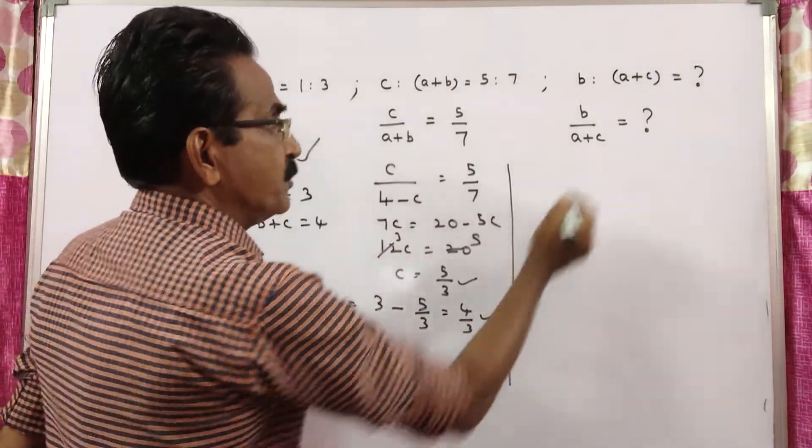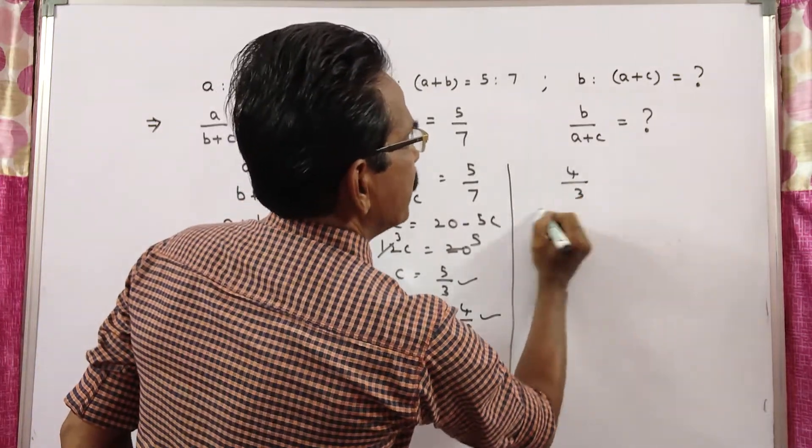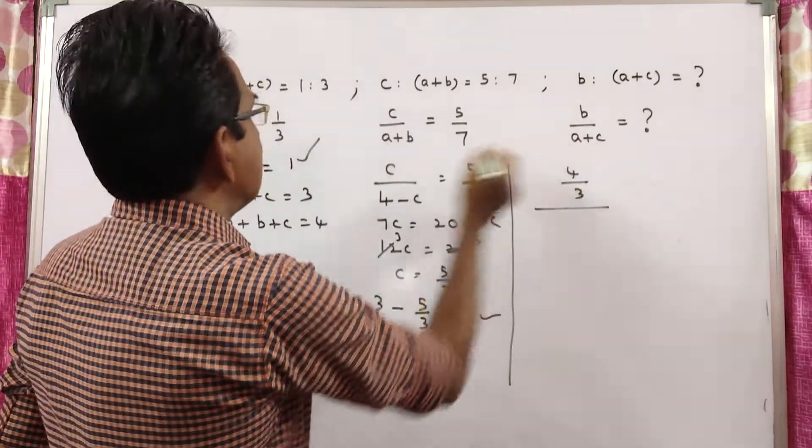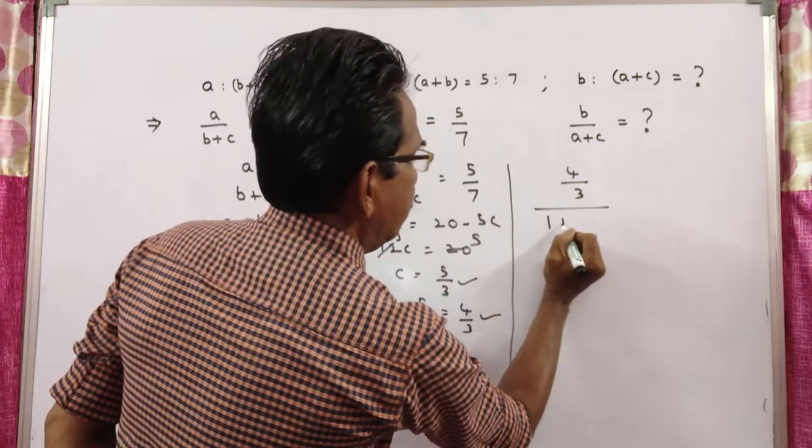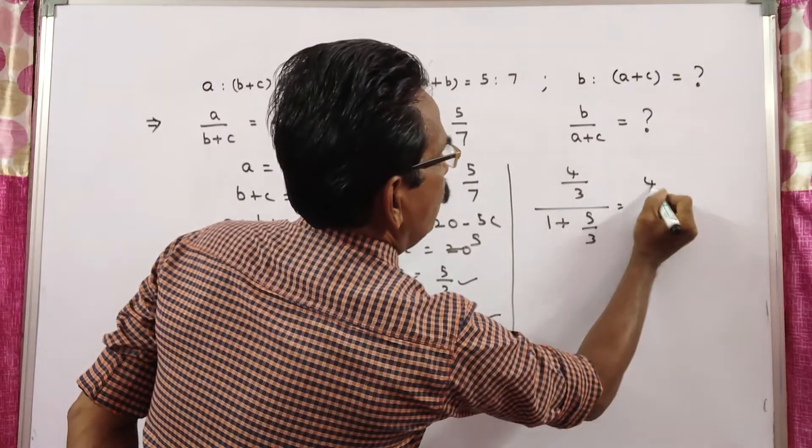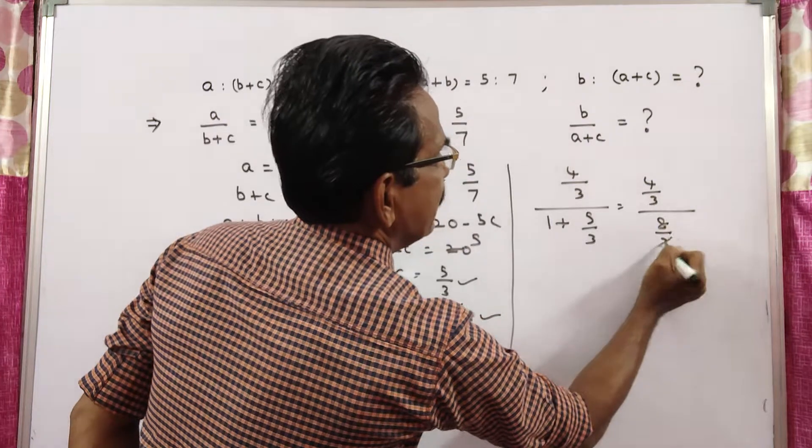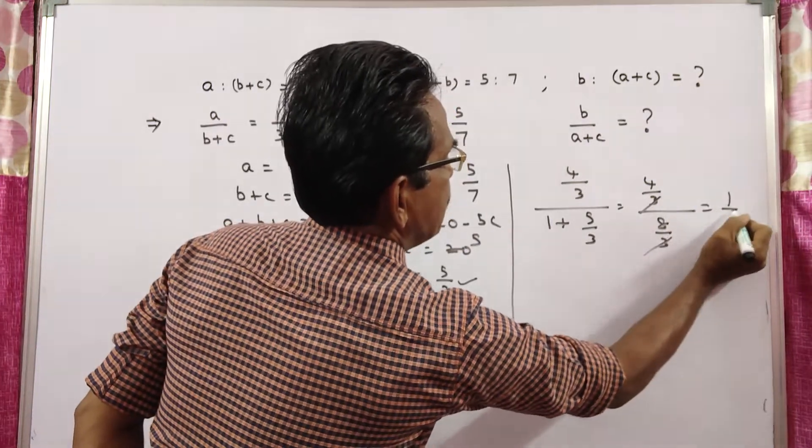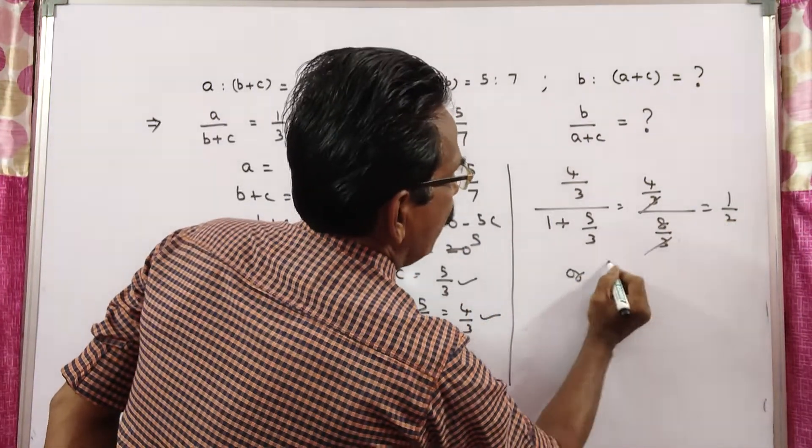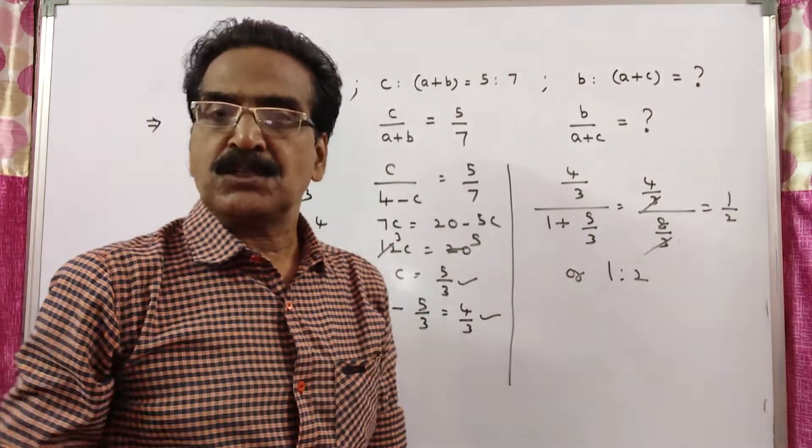Let us substitute these values in b by a plus c. So, b, 4 by 3 by a plus c, a is 1 plus c is 5 by 3. This is equal to 4 by 3 by 3 plus 5, 8 by 3. 3 gets cancelled, 4 by 8 means 1 by 2, or 1 is to 2.